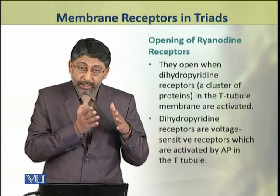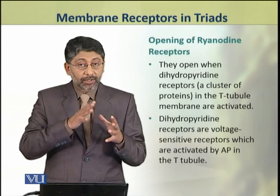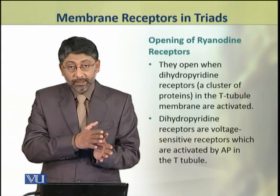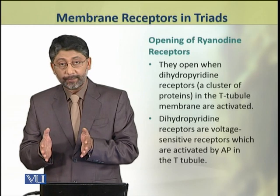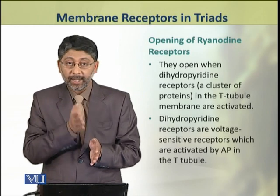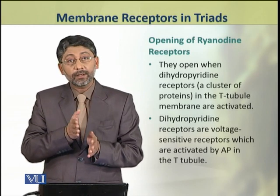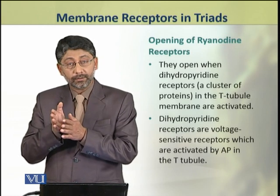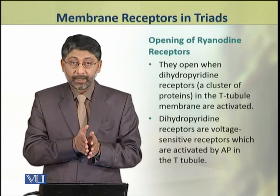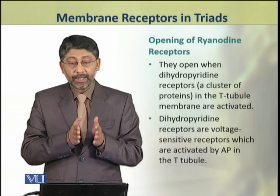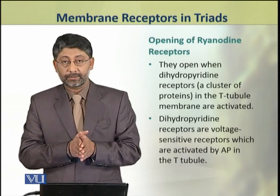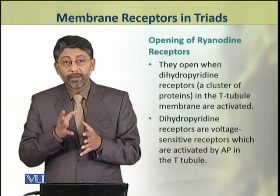Jab T-tubules me action potential aata hai, toh woh effect kerta hai ryanodine receptors ko ke woh open ho. Lekin is opening ke liye jo mechanism hai, woh yeh hai ki T-tubules ki membrane me ek receptor hai jinhe kehte hain dihydropyridine receptors.